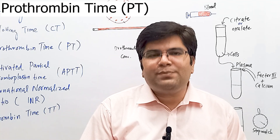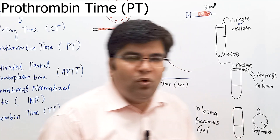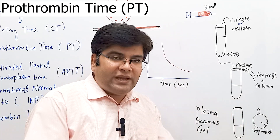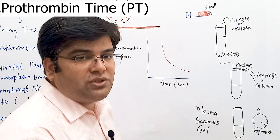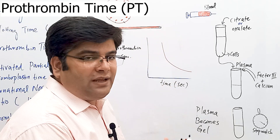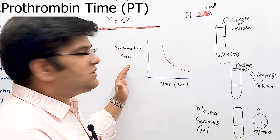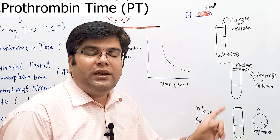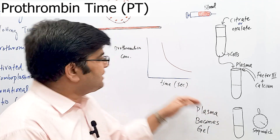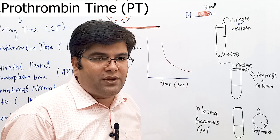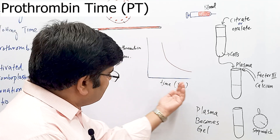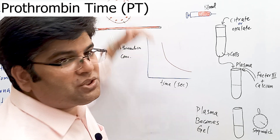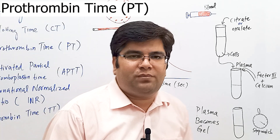When less prothrombin is present in the blood, more time is taken for it to clot. A graph is drawn with time on the x-axis and prothrombin concentration on the y-axis. More time to clot means lower prothrombin concentration; less time to clot means higher prothrombin concentration.